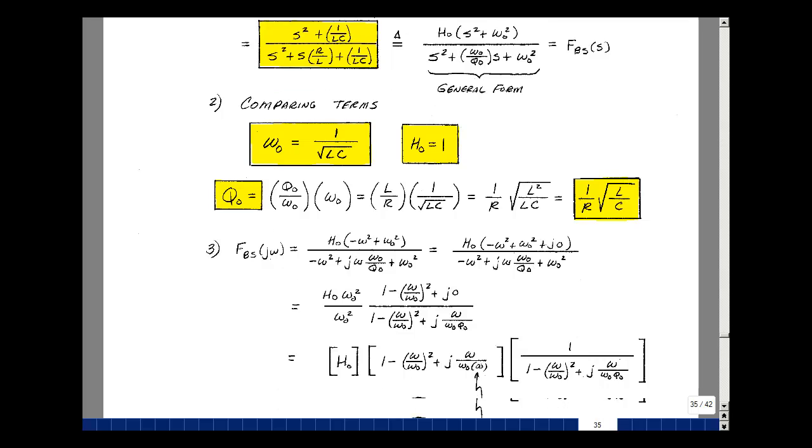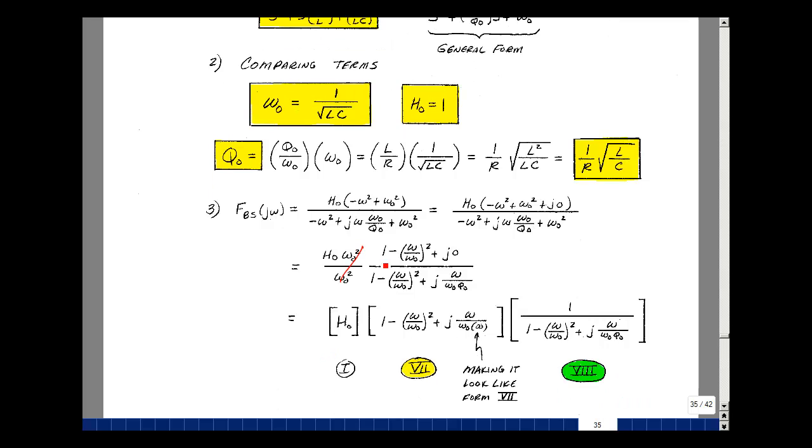So let's write this as a product of terms. It's canceled, so I just get H naught. A numerator term, I can write this as 1 minus the quantity omega over omega naught squared, plus J omega over omega naught, but make Q naught equal to infinity to give me a value of J0. So now this looks like our form 7 with our omega naught, but now a Q naught of infinity. And then lastly, here's our form 8. So 1 over 1 minus the quantity omega over omega naught squared, plus J omega divided by omega naught Q naught.